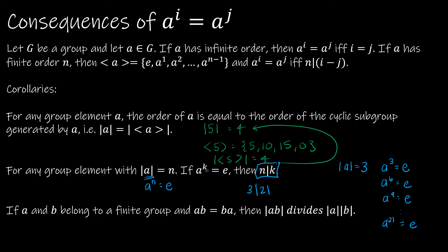The last corollary: if a and b belong to a finite group and are commutative, then the order of ab divides the order of a times the order of b.